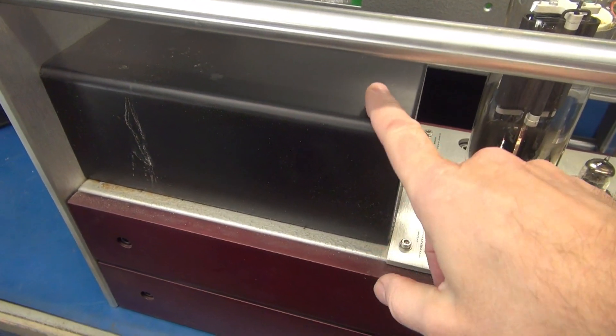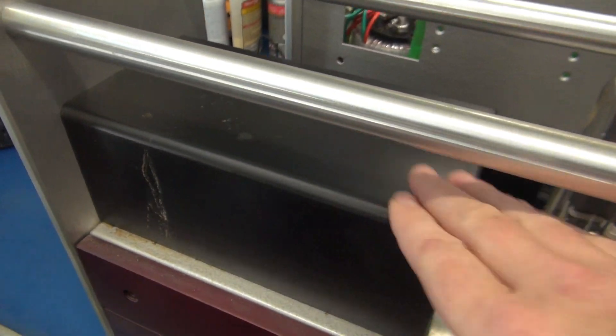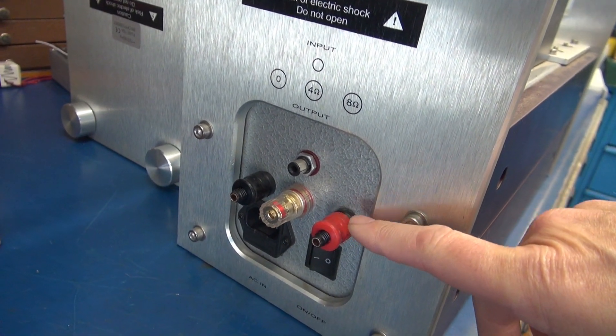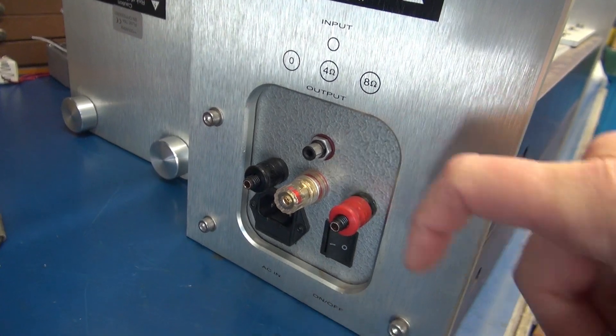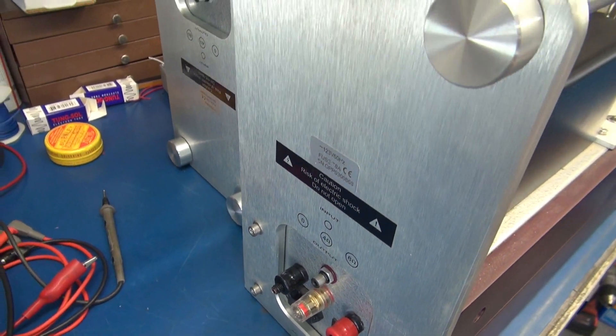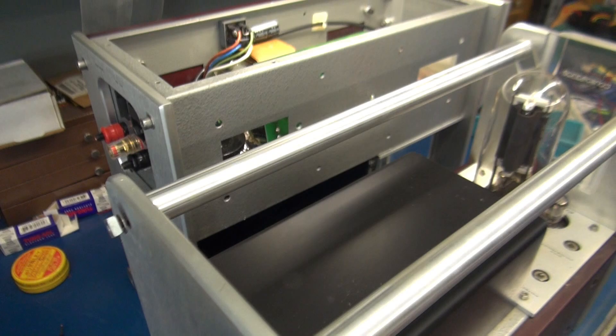I believe the power and output transformer are in this housing. There's a back panel. You got speaker outs for 4 and 8 ohm. This is your audio in and the power switch. Of course there's no pots on this guy because these are just amplifiers.